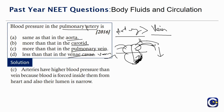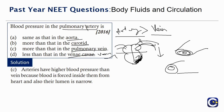Arteries have higher blood pressure than veins because the blood is forced inside them from the heart, and their lumen is narrow due to a thick muscle wall compared to veins, which have a larger lumen. So the answer is C — more than that in the pulmonary vein.